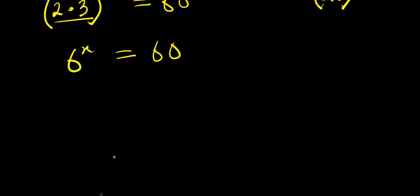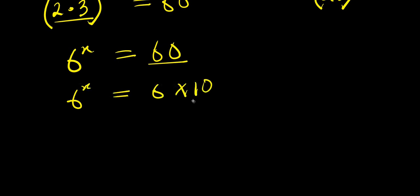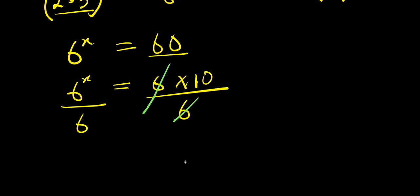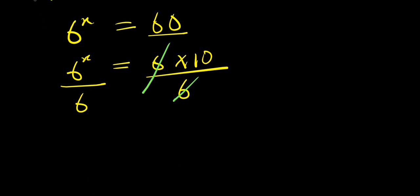The next step is I can express 60 as 6 times 10. I have 6 to the power x equals 6 times 10. Then I divide both sides by 6, so that 6 eliminates 6 here. So what I'm going to have would be 6 to the power x divided by 6 equals 10.